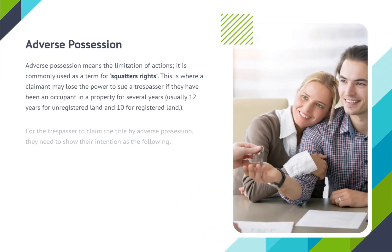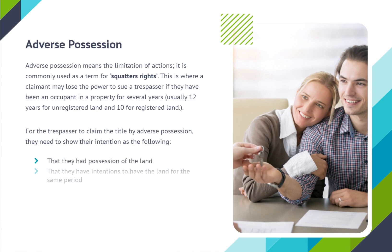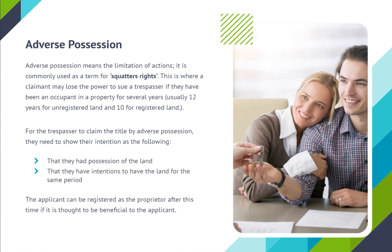Adverse possession means the limitation of actions; it is commonly used as a term for squatter's rights. This is where a claimant may lose the power to sue a trespasser if they have been an occupant in a property for several years — usually 12 years for unregistered land and 10 years for registered land. For the trespasser to claim the title by adverse possession, they need to show that they had possession of the land and that they had intentions to have the land for the same period. The applicant can be registered as the proprietor after this time if it is thought to be beneficial to the applicant.